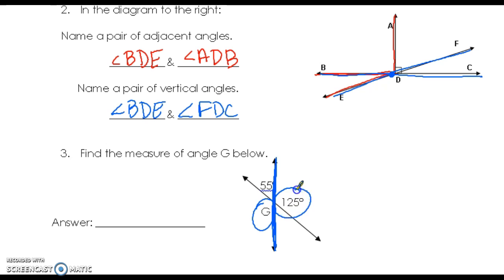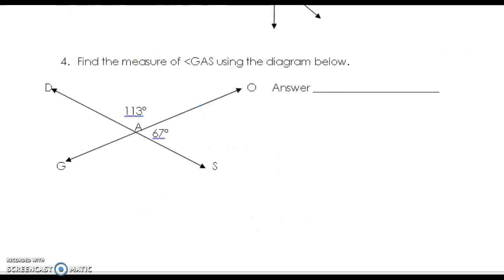Find the measure of angle GAS. Angle GAS is vertical to DAC, so it's going to be 113.